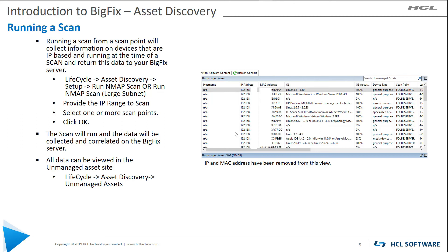Or you can give it an IP range that you want to scan. You can do this across multiple scan points simultaneously. Once it's out there and running, BigFix will gather that information from the scan point. That data will get consolidated, sent back up to the BigFix server, where it will digest that information. When you're looking for data, you'll find it under Lifecycle Asset Discovery, Unmanaged Assets.